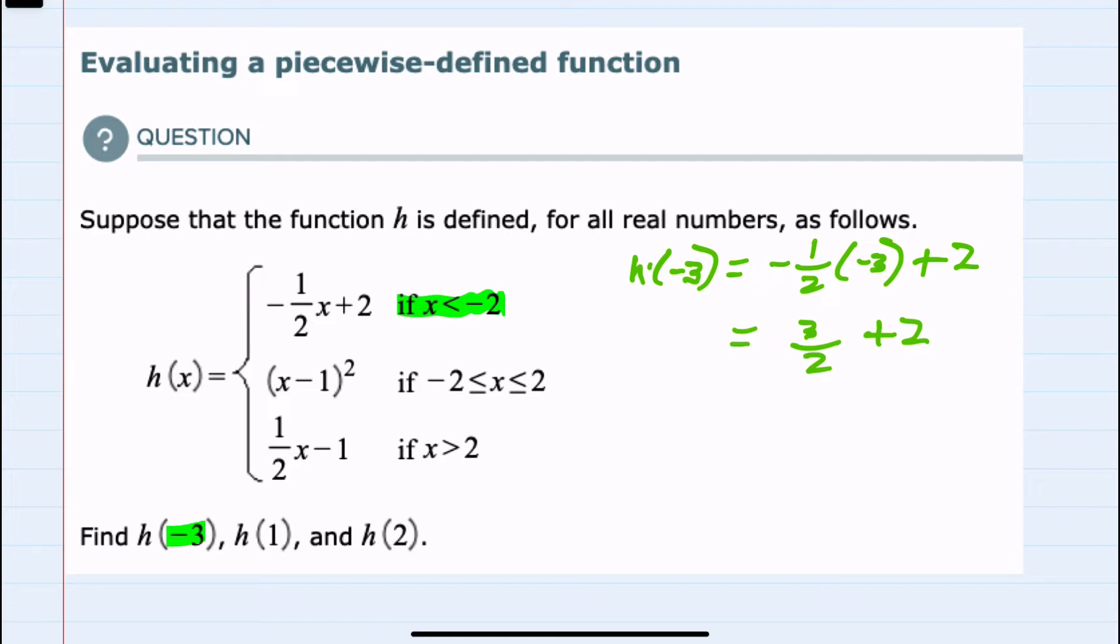Getting a common denominator here, 2 is the same thing as four-halves, which we can now add three-halves and four-halves for seven-halves. So we found the first h of negative 3.